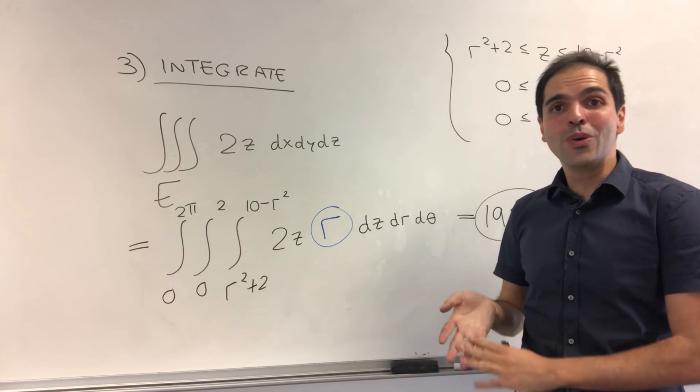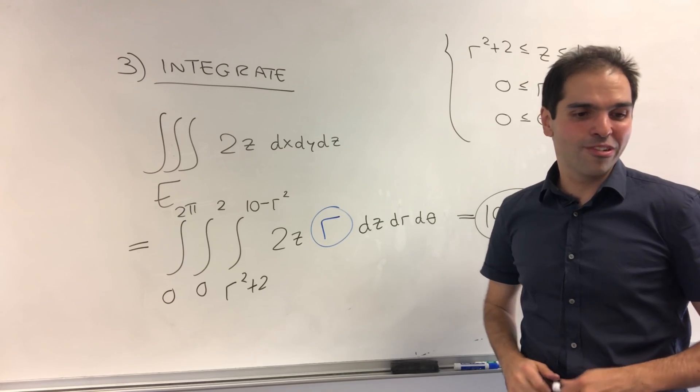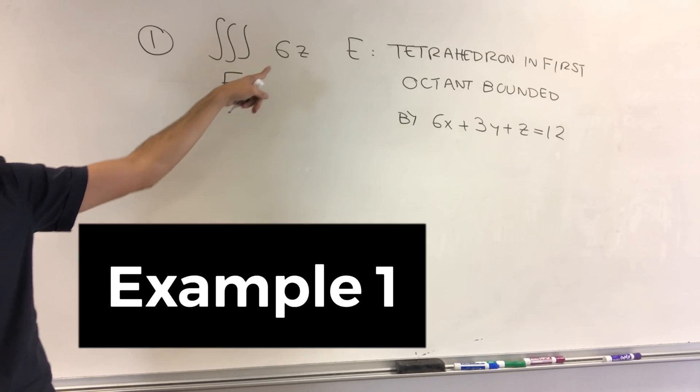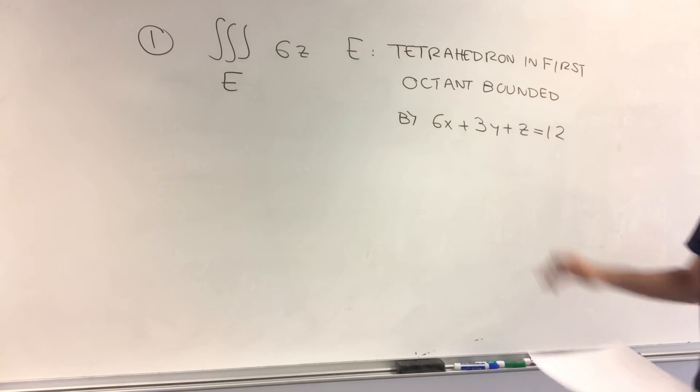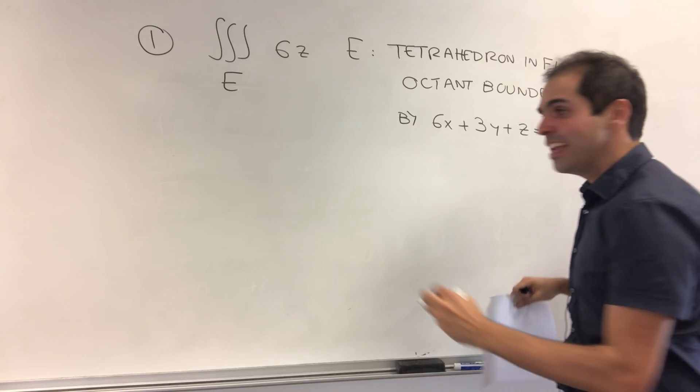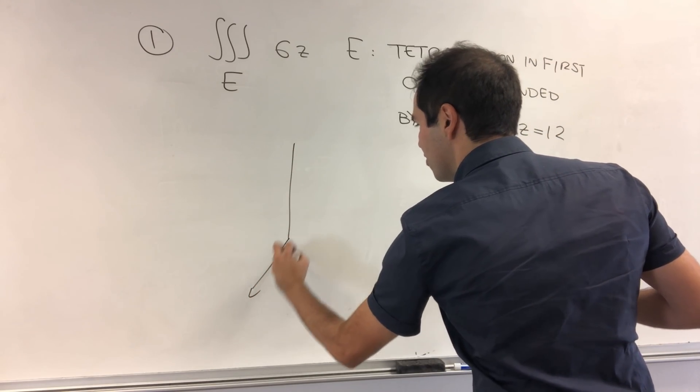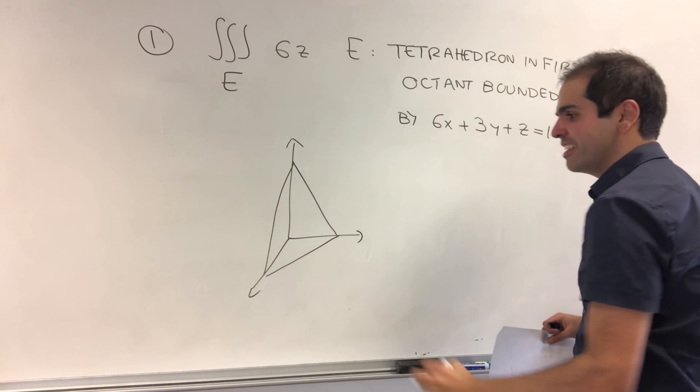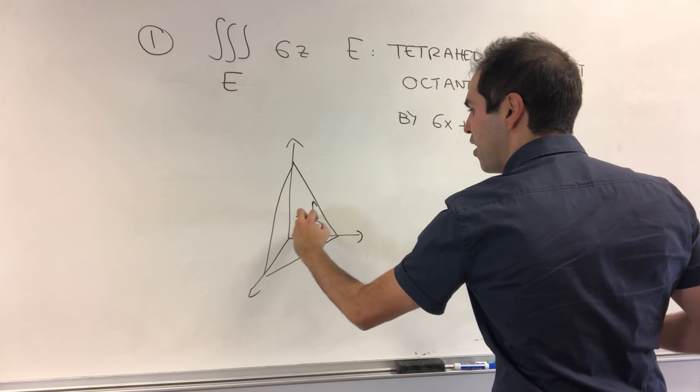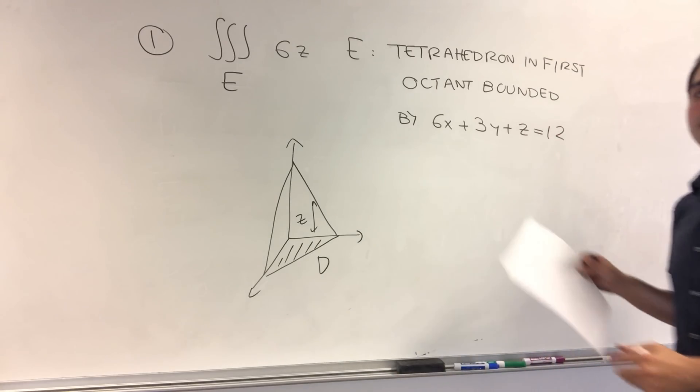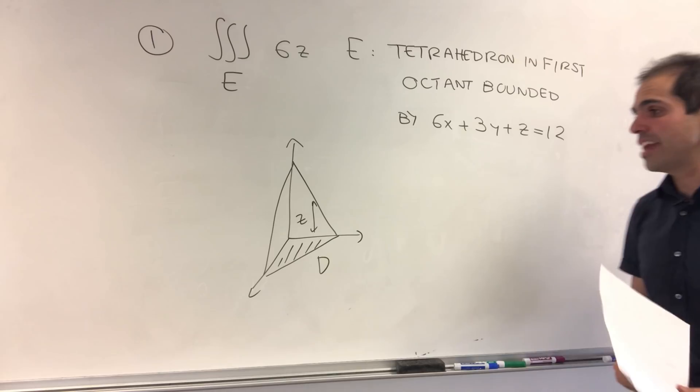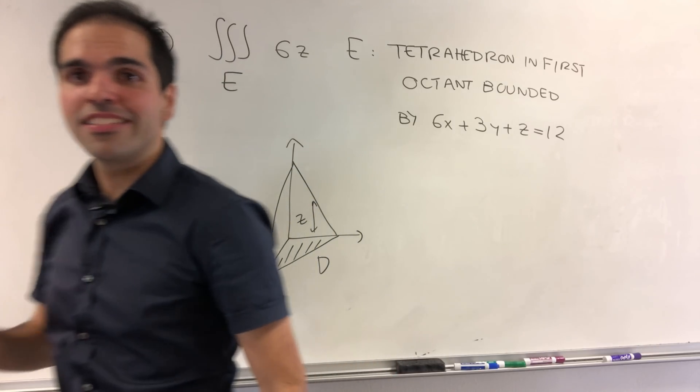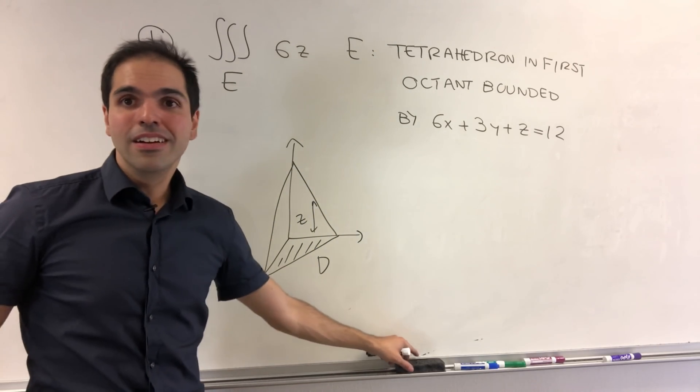And finally, to conclude, I want to show you some of my favorite triple integral problems, of which, again, there are some videos on my channel as well. So the triple integral of 6z, where E is a tetrahedron in the first octant bounded by this plane. And that's when you just do it with the intercepts. So you first find the x, y, z intercepts, and you get the tetrahedron. And then you find z between the smaller function and the bigger function. And you find D by simply setting, either using the intercepts or setting z equals 0. And this one is particularly nice. The answer simplifies quite nicely if you do a couple of u subs.